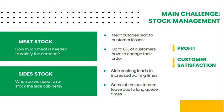A major challenge is without a doubt the food stock management. Meat outages lead to customer losses. Up to 8% of the customers have to change their order. Cooking times lead to increased waiting times and a significant part of the customers leave due to long queue times. All of these factors represent profit losses and a decrease in customer satisfaction levels.